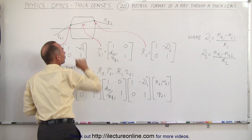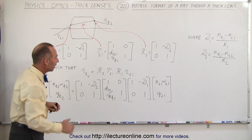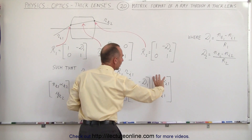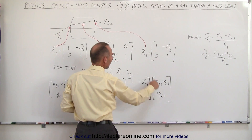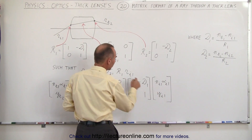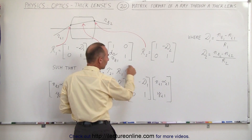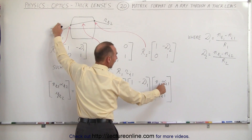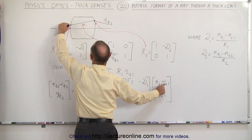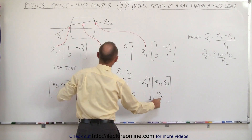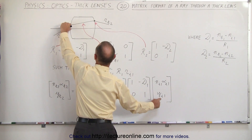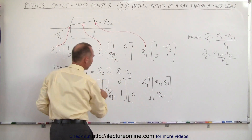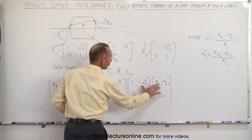If we place these in that particular order: first the 1-by-2 matrix giving us information about the incoming ray — the index of refraction, the angle relative to horizontal, and the height above the optical axis — we then have the three matrices to multiply in sequence.